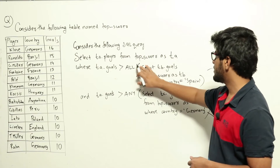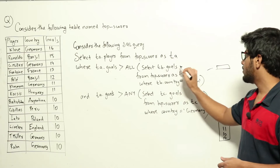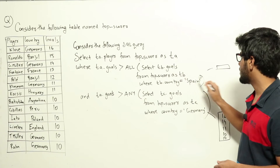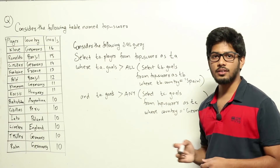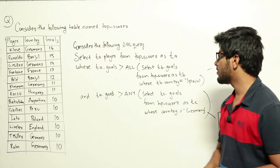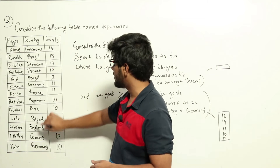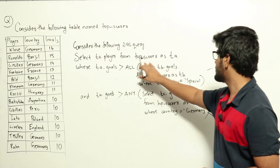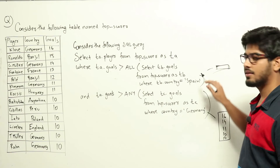Let's look at this subquery: SELECT tb.goals FROM topscorer AS tb WHERE tb.country = 'Spain'. It is returning goals where country is equal to Spain. But if you look at the table, there is not a single country having Spain, meaning that this query will return a null set — it won't be returning anything.